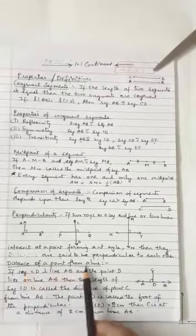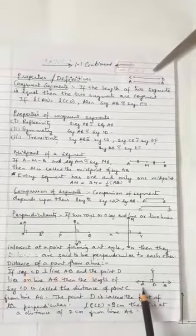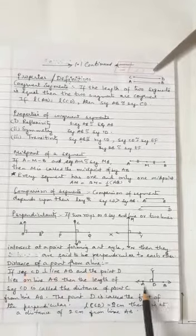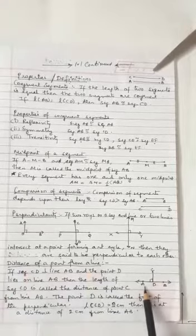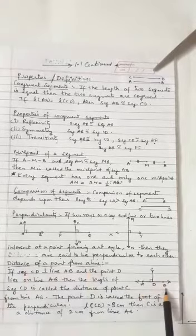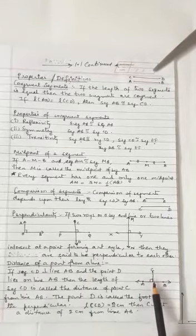Distance of a point from a line. In the picture, AB is the line and CD is a segment which is perpendicular to line AB. The segment CD intersects line AB at point D. So CD is the perpendicular distance on line AB.